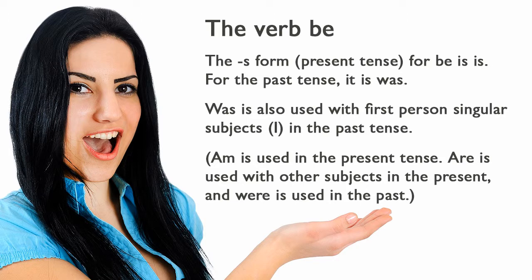The verb 'be': The S form in the present tense for 'be' is 'is'. For the past tense, it is 'was'. 'Was' is also used with first-person singular subjects (I) in the past tense. 'Am' is used in the present tense. 'Are' is used with other subjects in the present. And 'were' is used in the past.